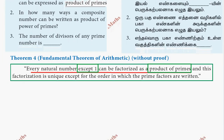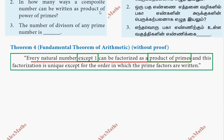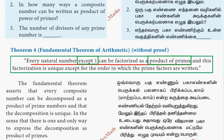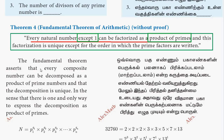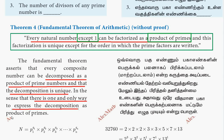Question number 2: In how many ways can a composite number be written as a product of power of primes? In the fundamental theorem, one composite number can be decomposed as a product of prime numbers, and the decomposition is unique. That is, there is one and only one way to express the decomposition as a product of primes.